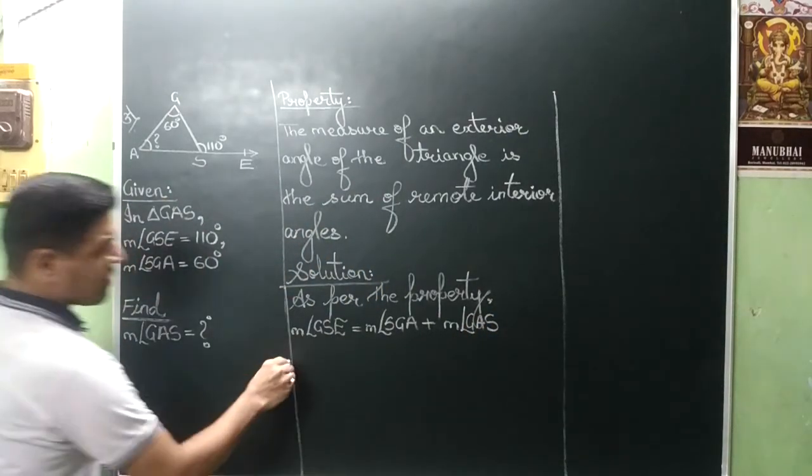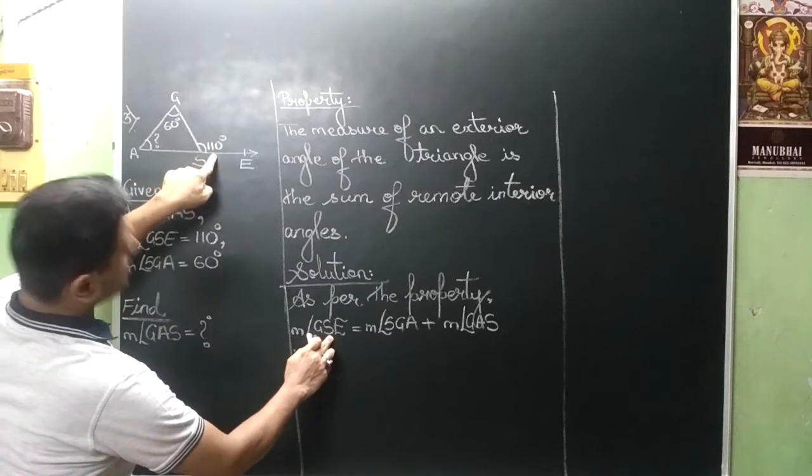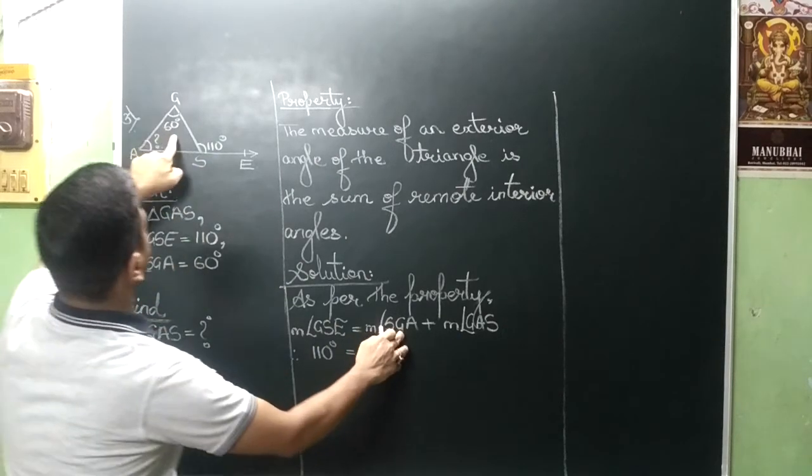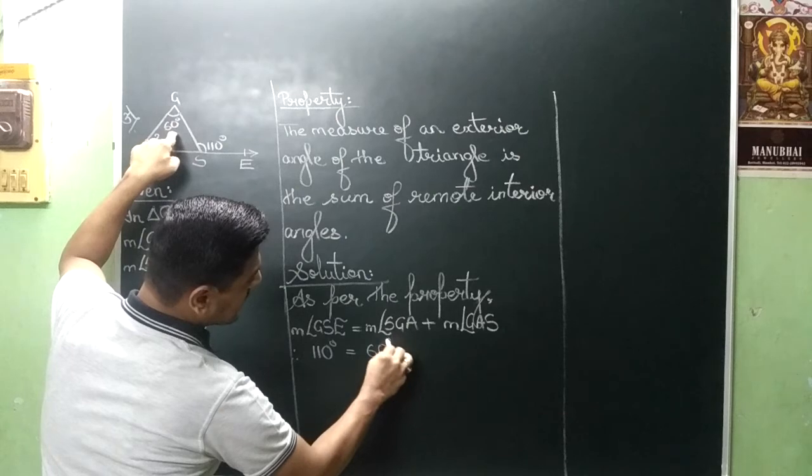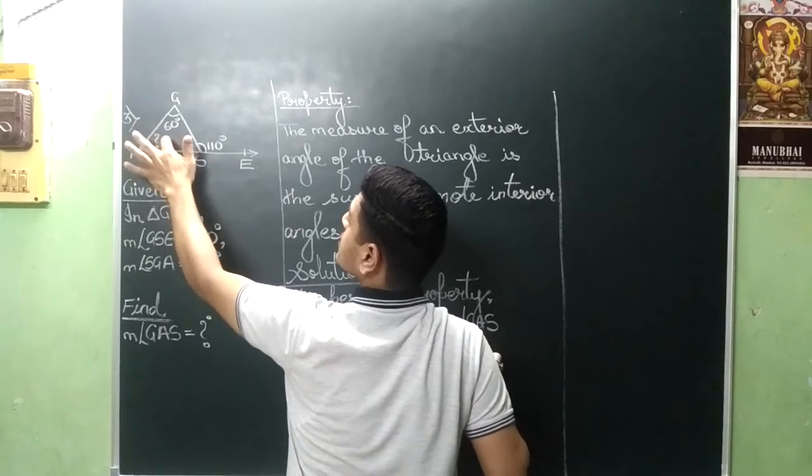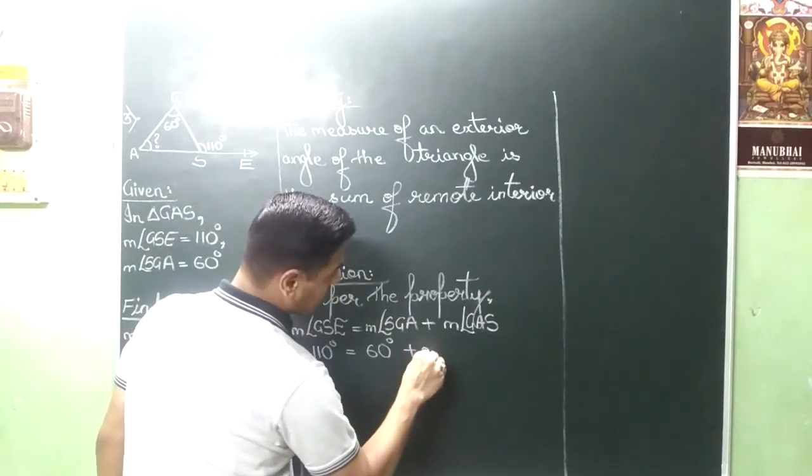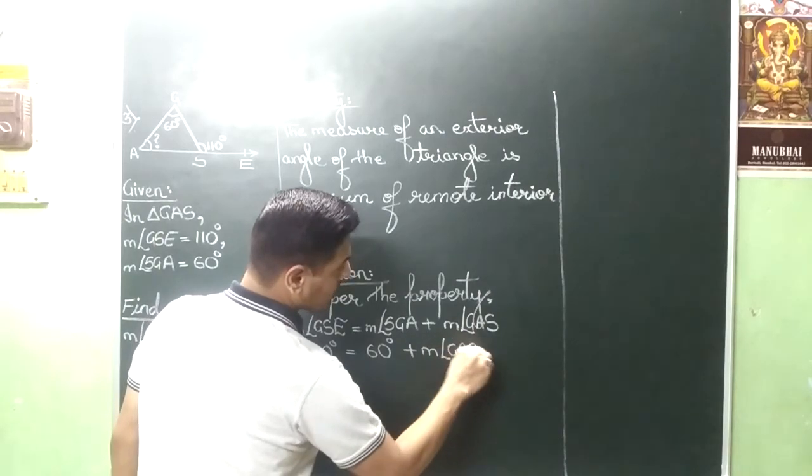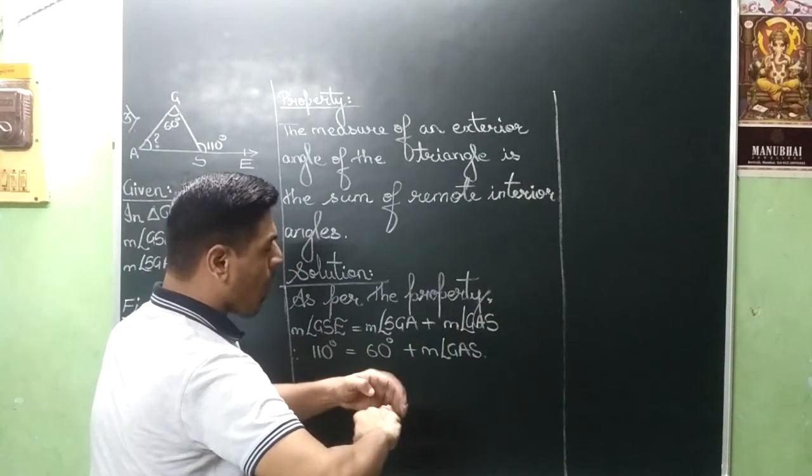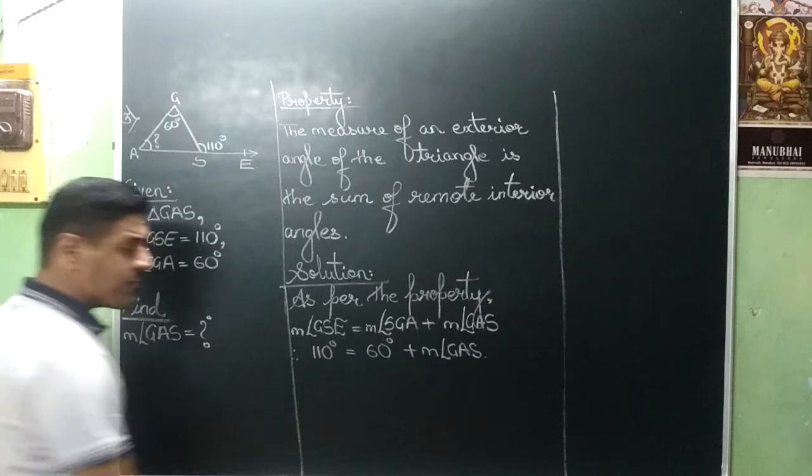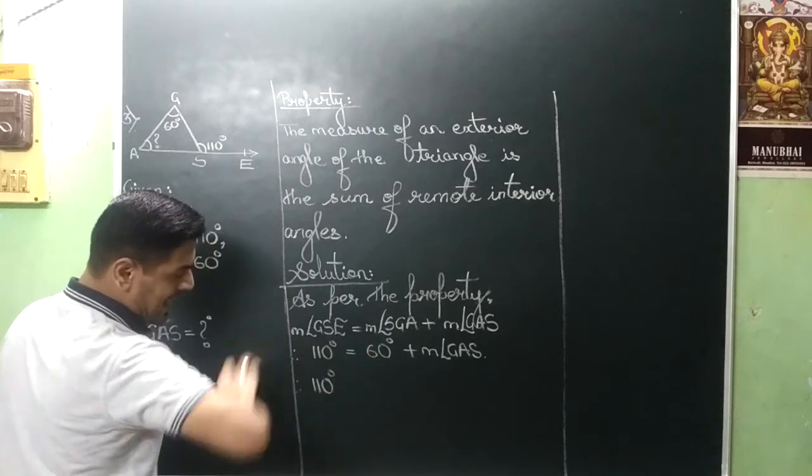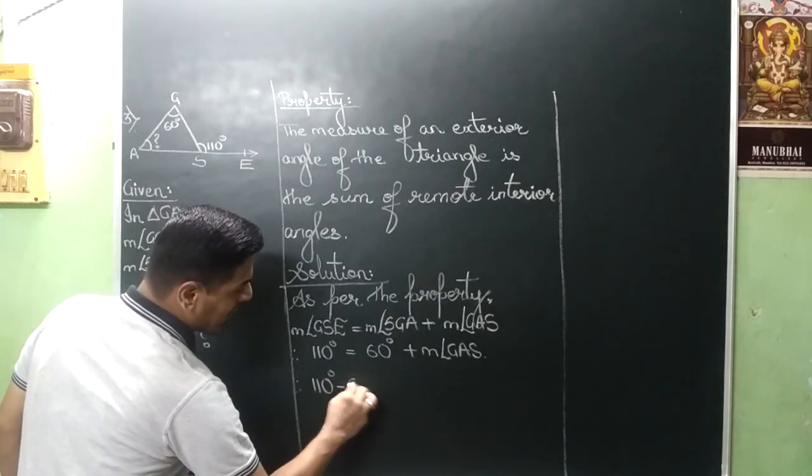Let us substitute the values. S, in place of S we will write 110 degrees is equal to G, in place of G we will write 60 degrees plus A, in place of A it is question mark. We copy the whole name as it is. Now what will happen? This 60 which is on the right side, positive, it will go to left and it will become negative. And this will become 110 degrees minus 60.